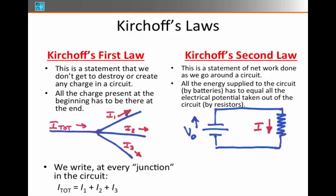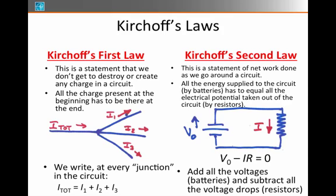A circuit, remember, is always a complete loop. That equation would be V0 minus IR has to equal zero. In essence, we're going to add any voltages that we see in the form of batteries as we go around the loop, and we're going to subtract all the voltage drops in the form of resistors. At a point where there's a resistor, there's a current I, and the voltage drop across that resistor is IR.